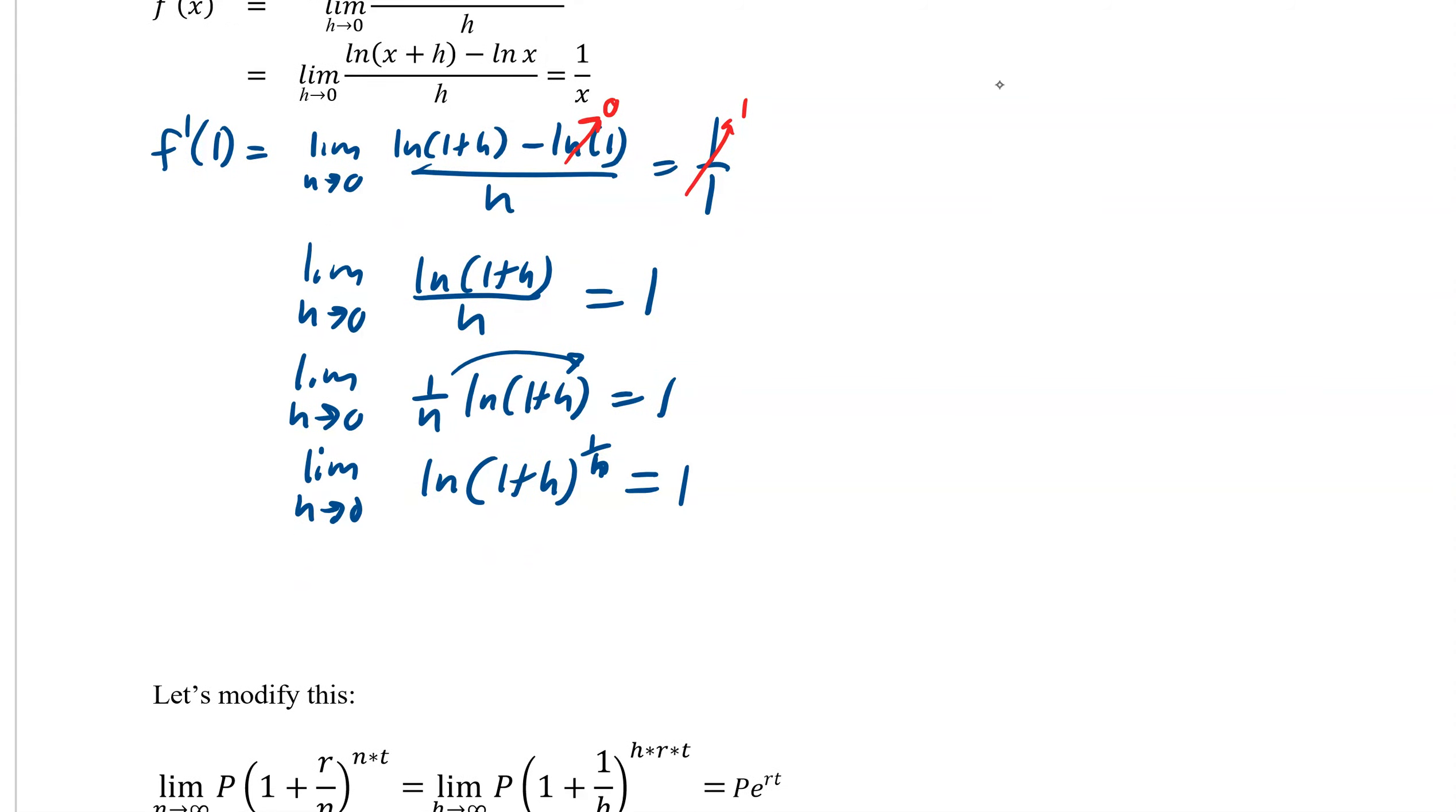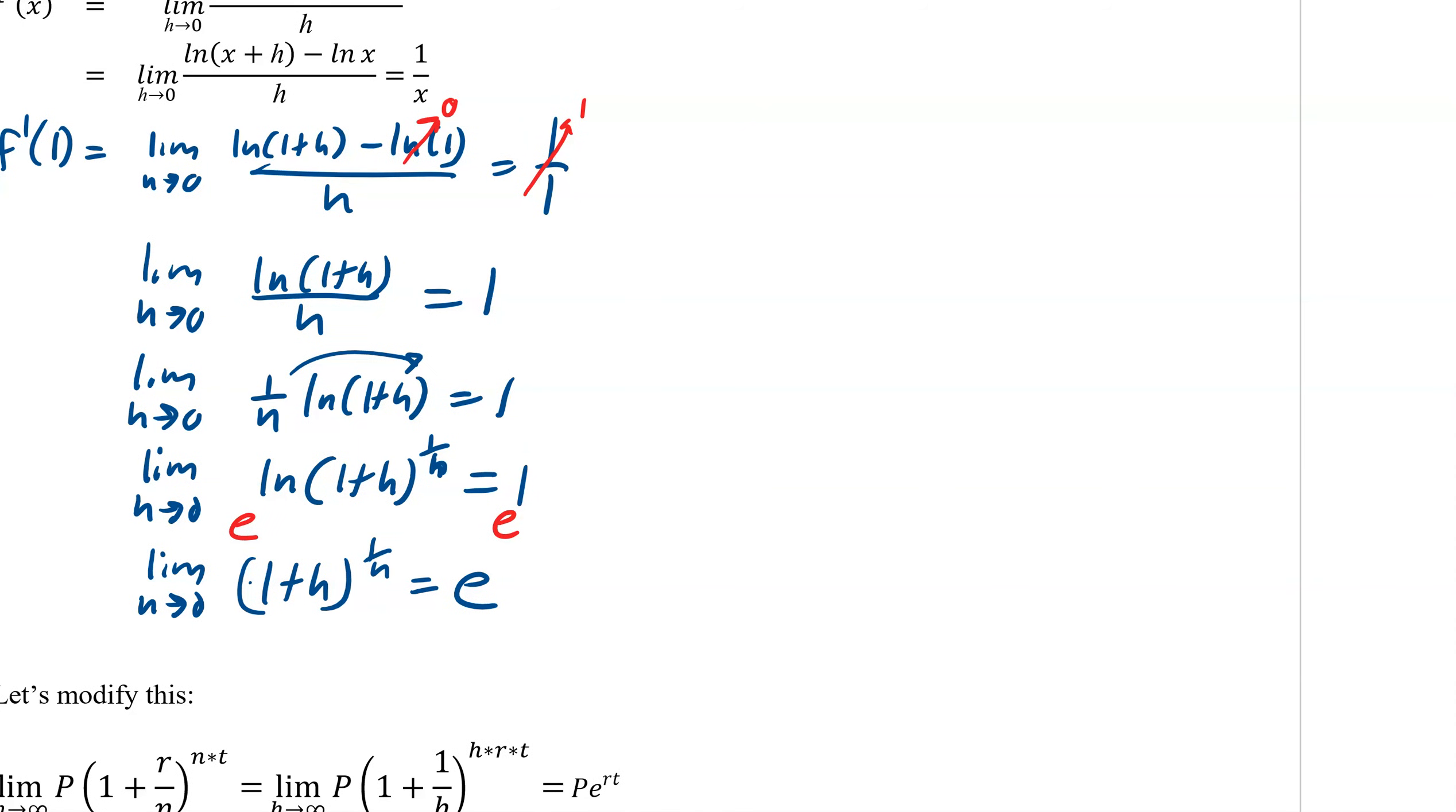All right. Now if we take e to both sides, because we have a nice continuous smooth function with e, we get that e will cancel. 1 plus h to the 1 over h equals e. Limit as h approaches zero. And there you have it.